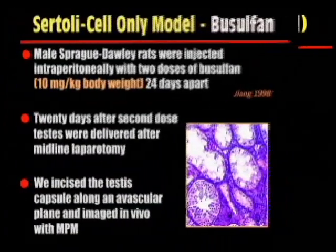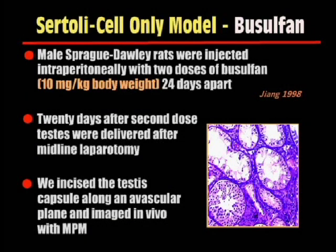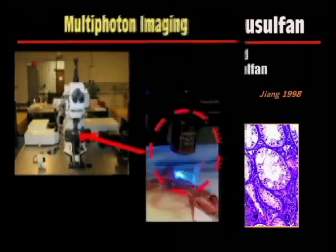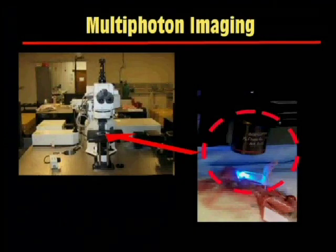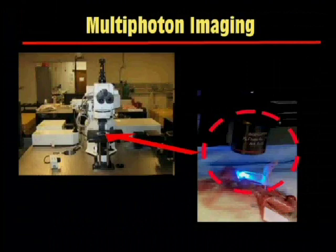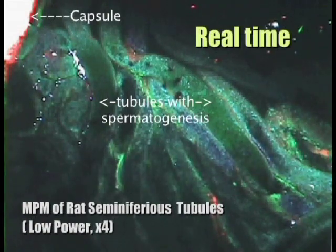In order to study whether MPM can be used to identify focal sites of spermatogenesis, we used a rat Sertoli cell only model. This model enables us to create a heterogeneous pattern of histologies within the testes. In four adult male Sprague-Dawley rats, we injected busulfan at 10 mg per kg on day 0 and day 22. About 20 days after the second dose, we imaged the testes. Under ketamine anesthesia, we placed the live animal under the multiphoton microscope. The blue light of the laser is demonstrated in the figure. The testes capsule was incised, and tubules imaged directly under the multiphoton microscope.